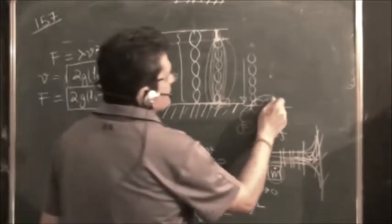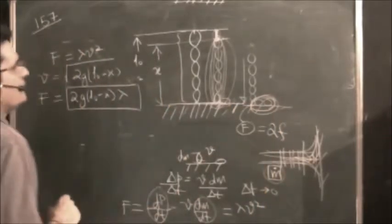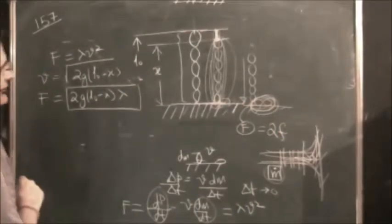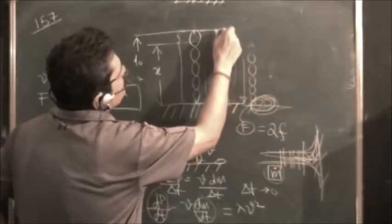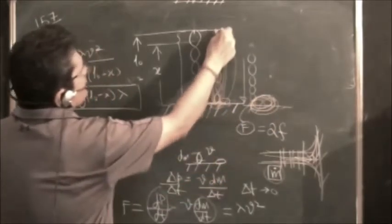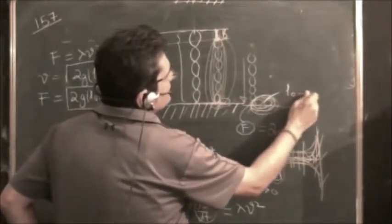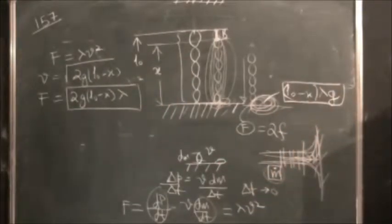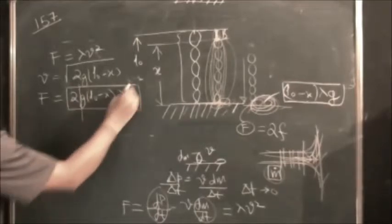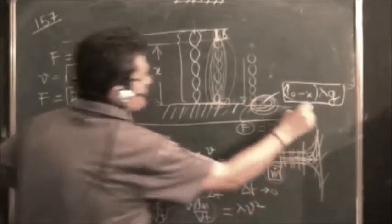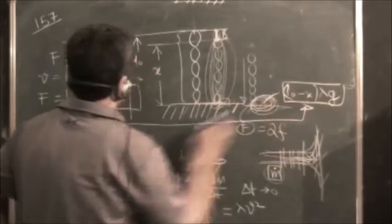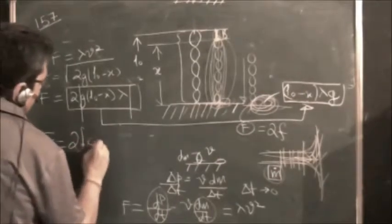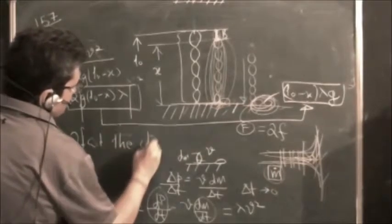This is the force. Now what is the length which is already on the floor of the table? What is the weight because of that? Weight because of that would be also same length has assembled here, and what is this? This is (L₀ - X)λg, which is the weight of the length which is already there. And this is twice of this value. If you compare, this is twice of (L₀ - X)λg. So the force exerted is twice the weight of the chain already on the table.